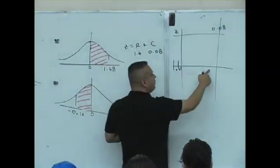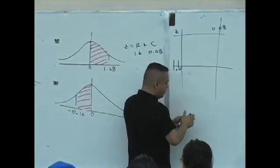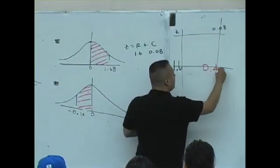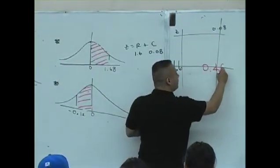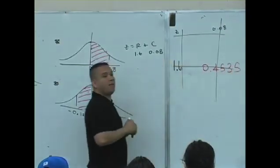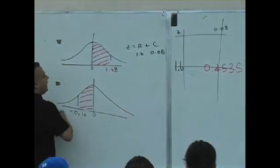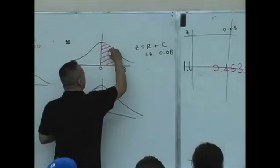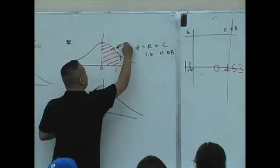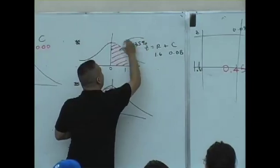What score do you see? What percent of the bell is shaded there? What do you see? 0.4535 — that's the probability. As a percent, isn't it 45.35%?